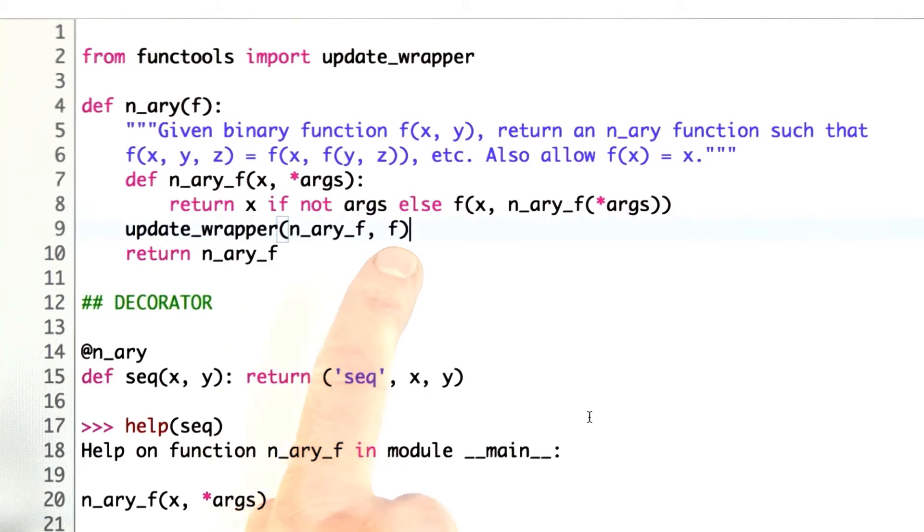And now, when I ask for help, when I define n_ary sequence and I ask for help on sequence, what I'll see is the correct name for sequence, and if there was any documentation string for sequence, that would appear here as well.